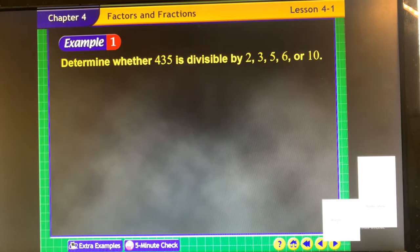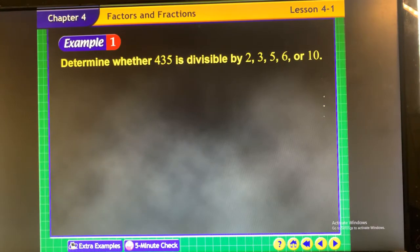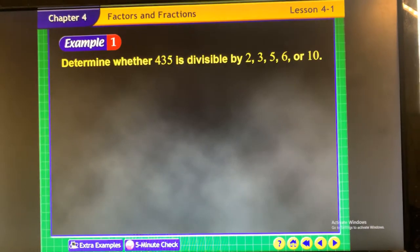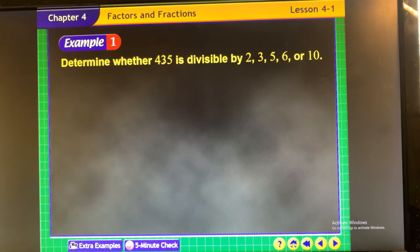First, the divisibility rule for 2 is as long as it ends in an even number, 2 goes into it. Divisibility rule for 3 is if I added up 4 plus 3 plus 5, if that's a number that 3 can go into, then 3 can go into this whole number.